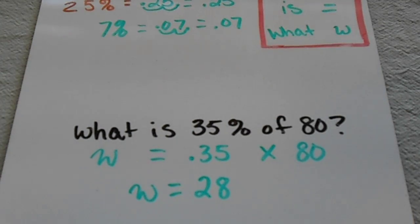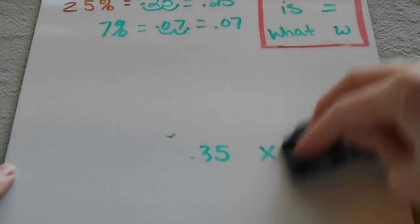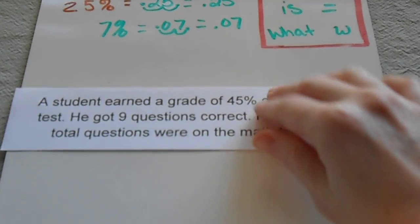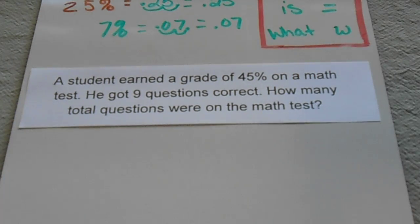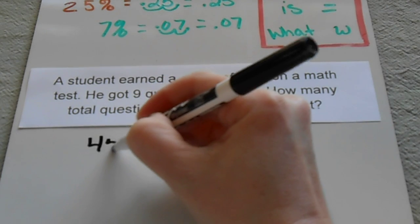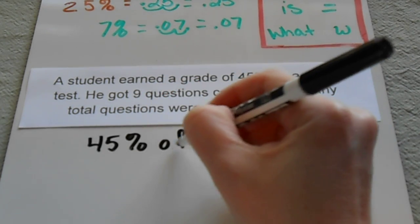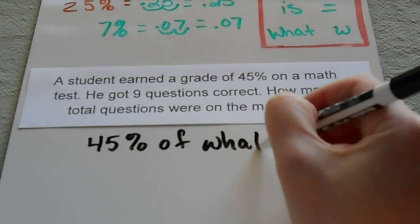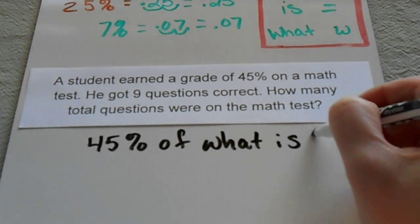Let me show you a different way of writing this. A student earned a grade of 45% on a math test. He got nine questions correct. How many total questions were on the math test? So to simplify this one, my sentence is going to be '45% of what is 9?'